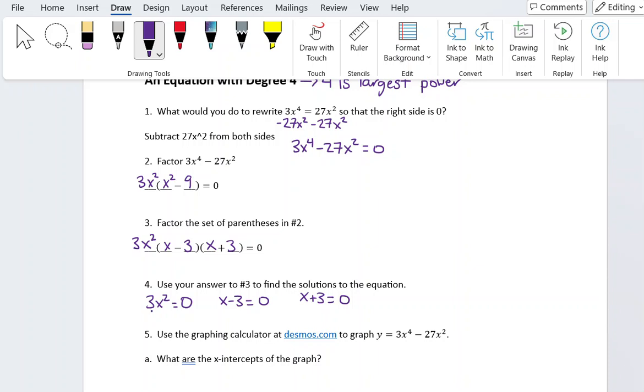For 3x squared equals 0, I'm going to divide both sides by 3. That gives me x squared equals 0. And then if we take the square root of both sides, we see that x has to be 0. The only number squared that equals 0 is 0 itself.